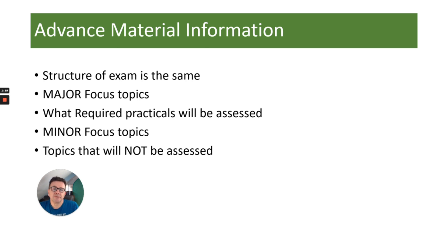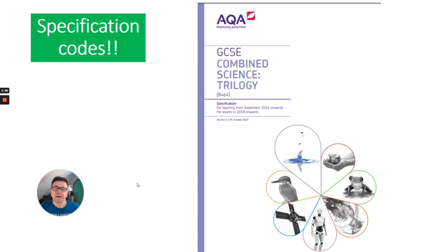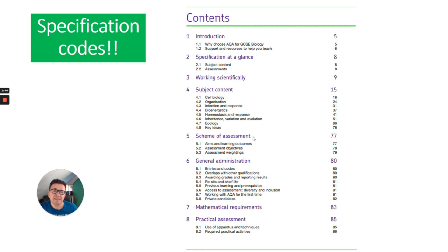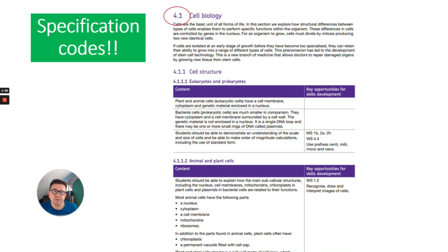They're also telling you the topics that won't be assessed — so will not be in your exam, either Paper 1 or Paper 2. It's important you know which ones those are so you don't go away and revise them. Your teachers might mention specification codes to you. You can find those if you Google 'AQA Combined Science Spec Codes' — it's in a booklet designed for teachers, but it's useful to look at the subject content and see the spec codes for cell structure and animal and plant cells.